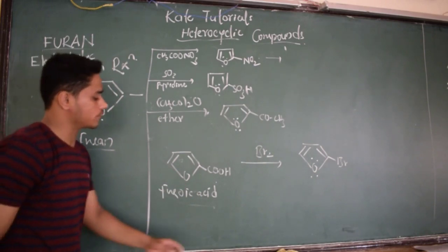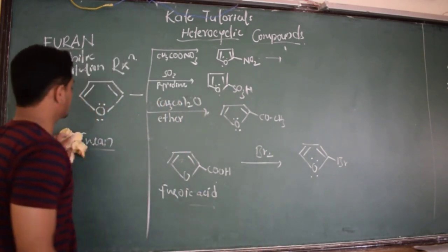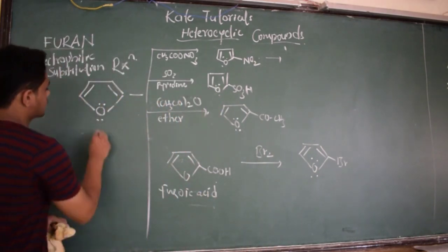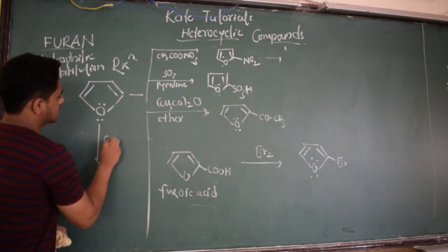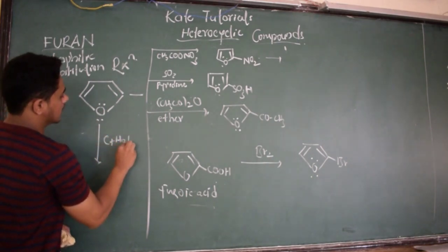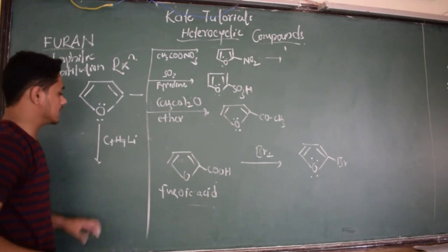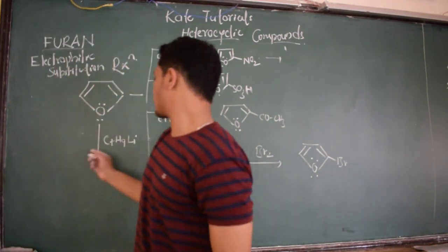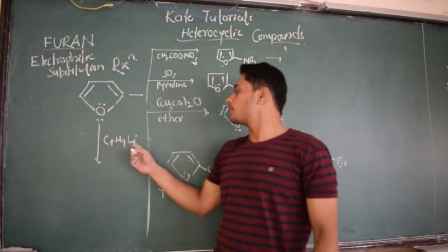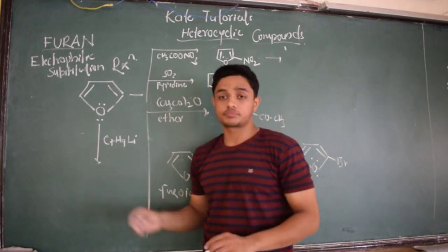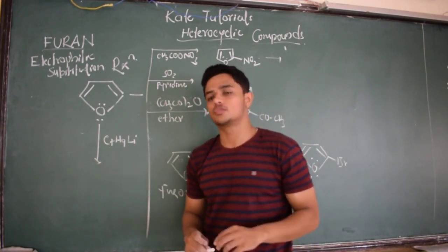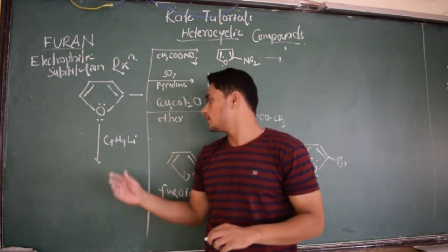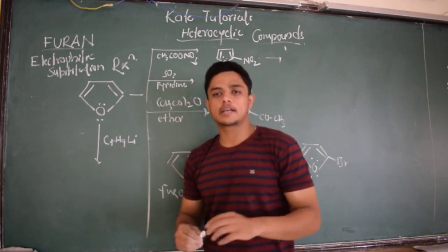What we do is take this furan and treat it with C4H9Li - that is nothing but lithium. This is butane. From butane we will replace H by lithium. So this is an organometallic compound which you will learn in organic chemistry.